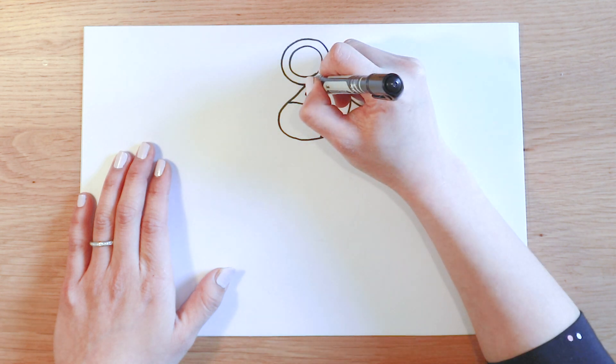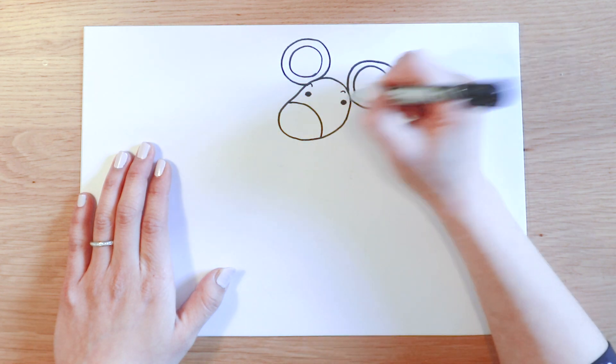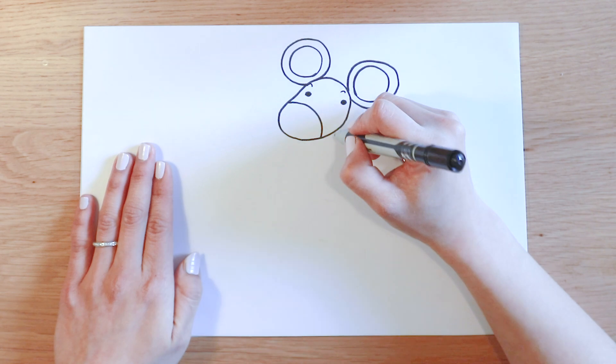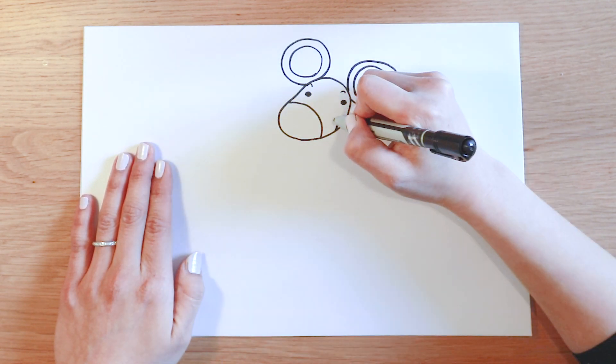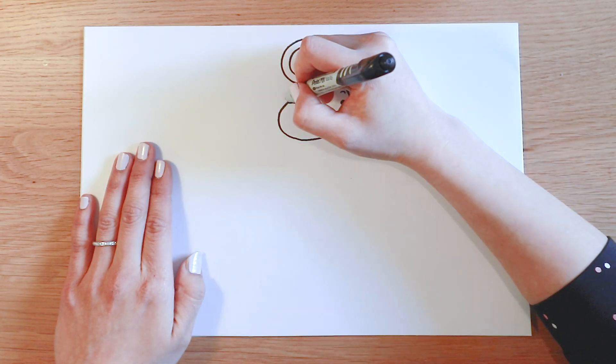I'm just adding his eyebrows. Let's draw his mouth. Start from here, add a tiny line at the end and draw his whiskers.